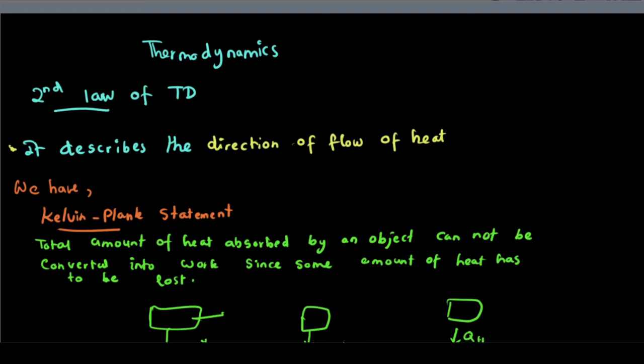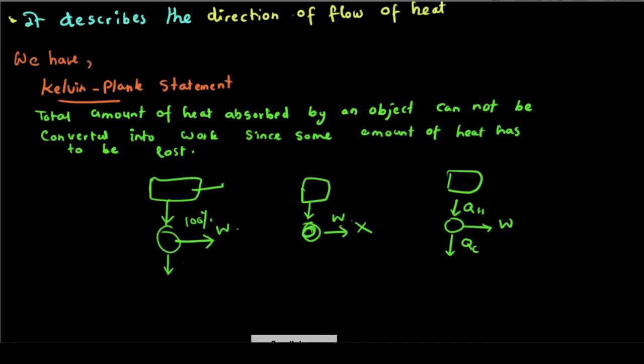We have the Kelvin-Planck statement: The total amount of heat absorbed by an object cannot be converted into work since some amount of heat has to be lost.